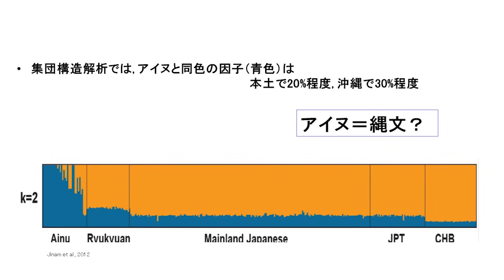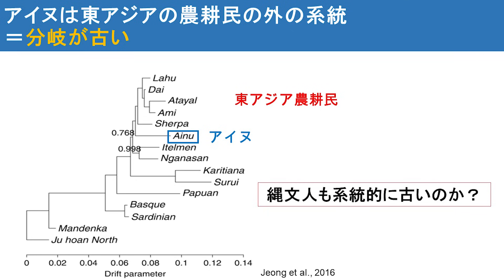集団構造解析の結果では、アイヌの人たちがほぼ青色成分で占められています。琉球列島の人たちはこの青色成分がおよそ30%存在しており、本土日本人は20%ほど持っています。もしこの青色が縄文要素とするならば、アイヌの人たちが100%縄文由来で、琉球列島が30%、本土日本人が20%となります。しかしここで問題となるのがアイヌの人たちが全く縄文人と遺伝的に同質な集団であるのかという点です。